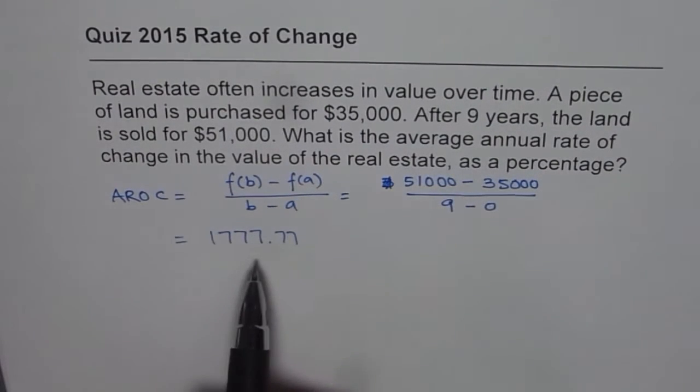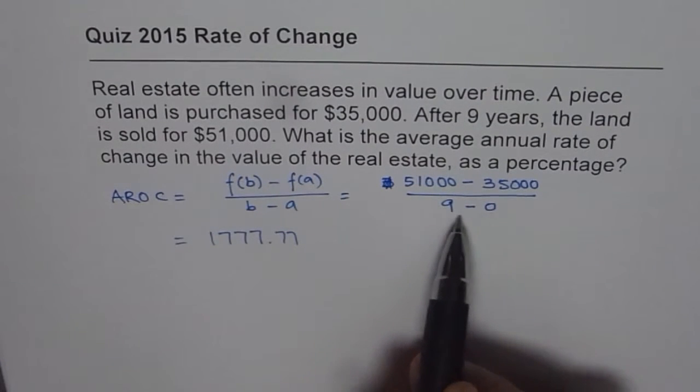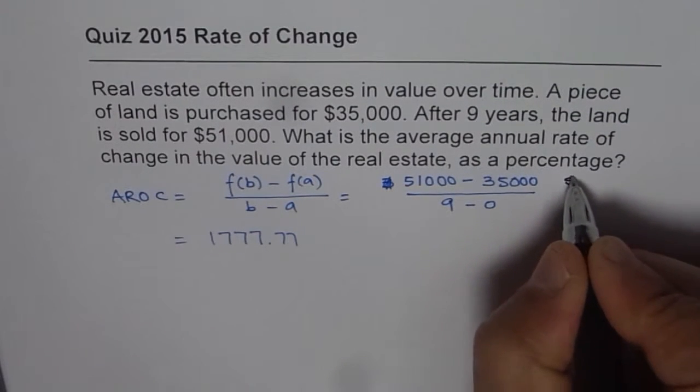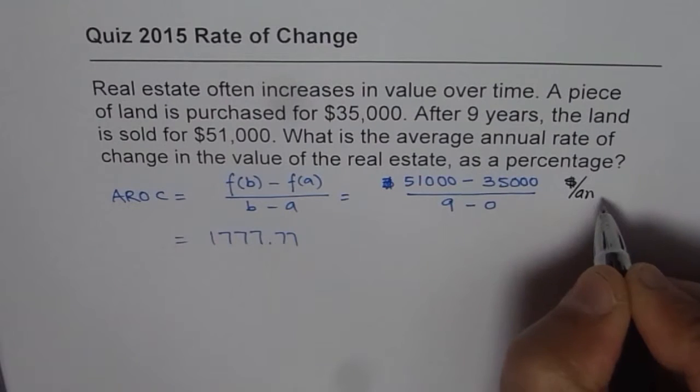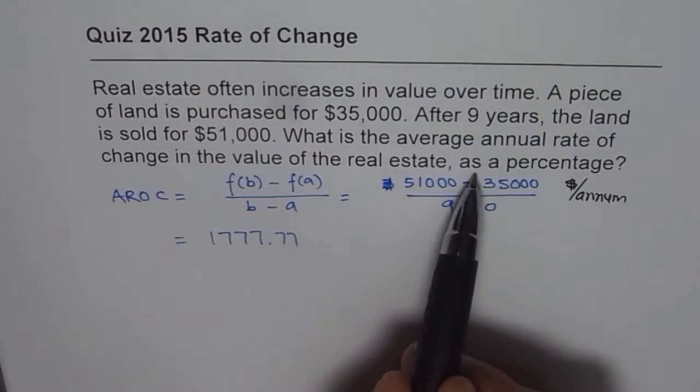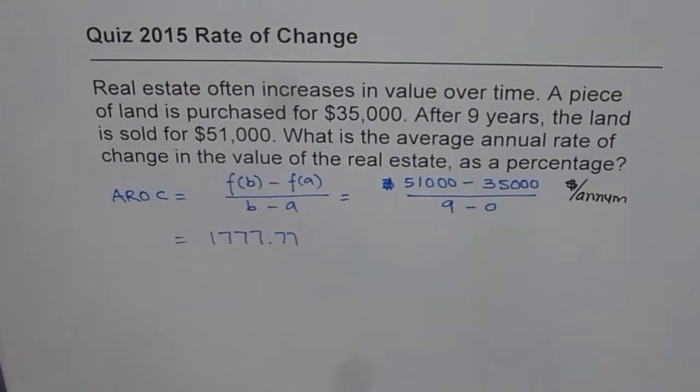So, what we found is average rate of change per annum, right? Because we divide by nine years. We found that this is dollars per annum, per year. Now, the question is, as a percentage, how will you find as a percentage?